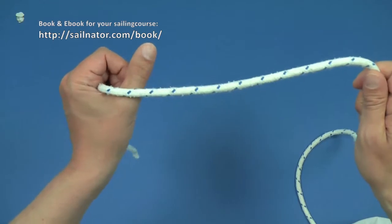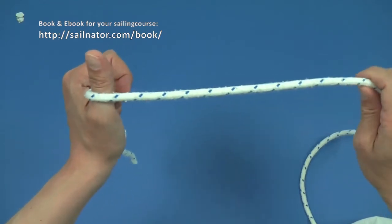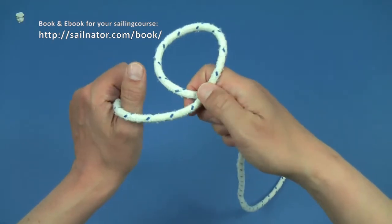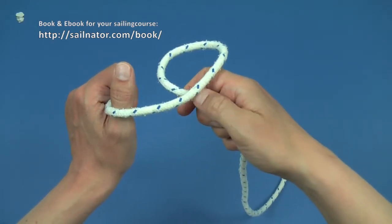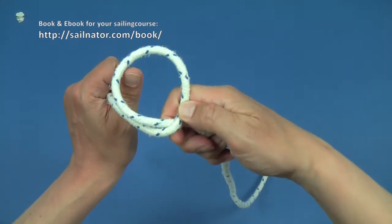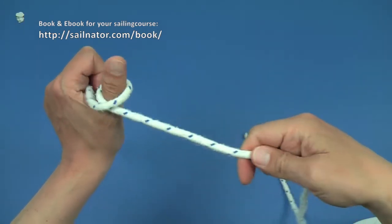I take the loose part of the line in my right hand. I turn the line into a loop where the moored part lies above the loose part of the line. I put the loop over the post and pull the imaginary boat towards me as close as possible.